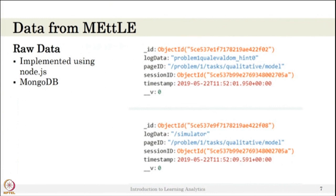Here are two examples showing the raw data in METEL's data store. METEL is implemented using Node.js, and the log data from students is stored in MongoDB. You can see in MongoDB, we have a structure with ID (student ID), session ID, and page ID—exactly which page the student is on. In this example, the student is in the problem task qualitative model. The student has selected the qualitative sub-task in the problem map and is asking for a hint—that's the log data, with timestamp.